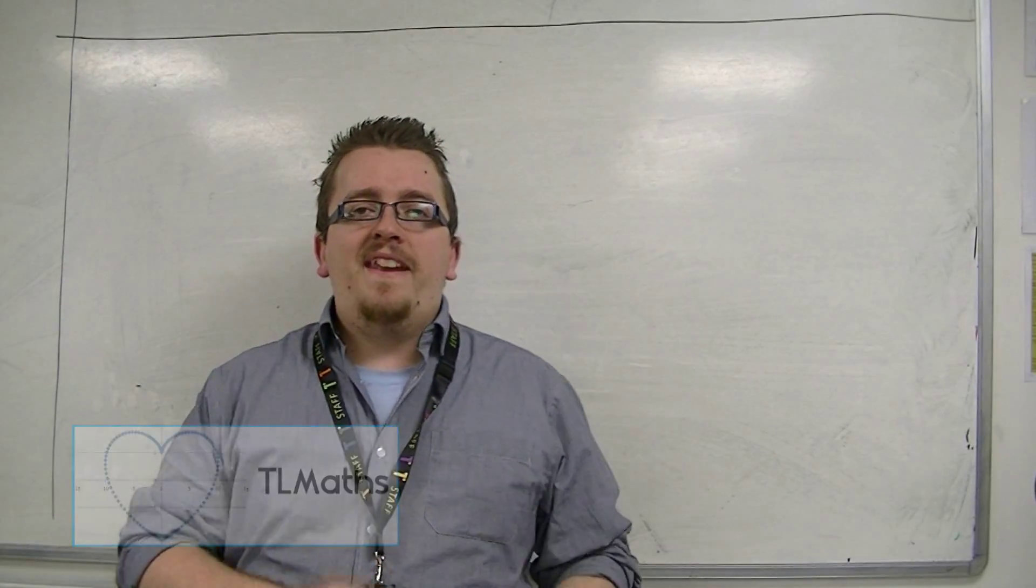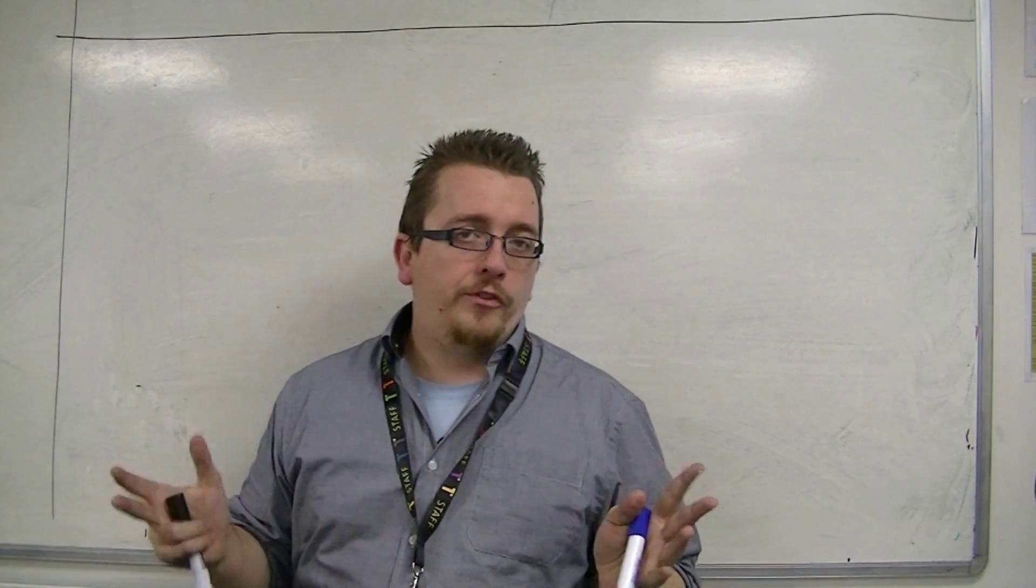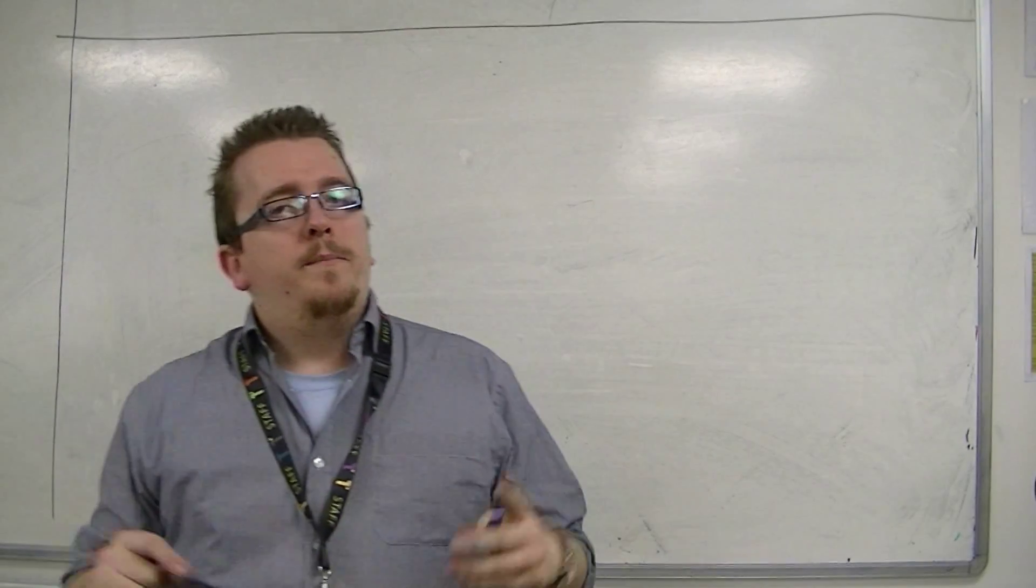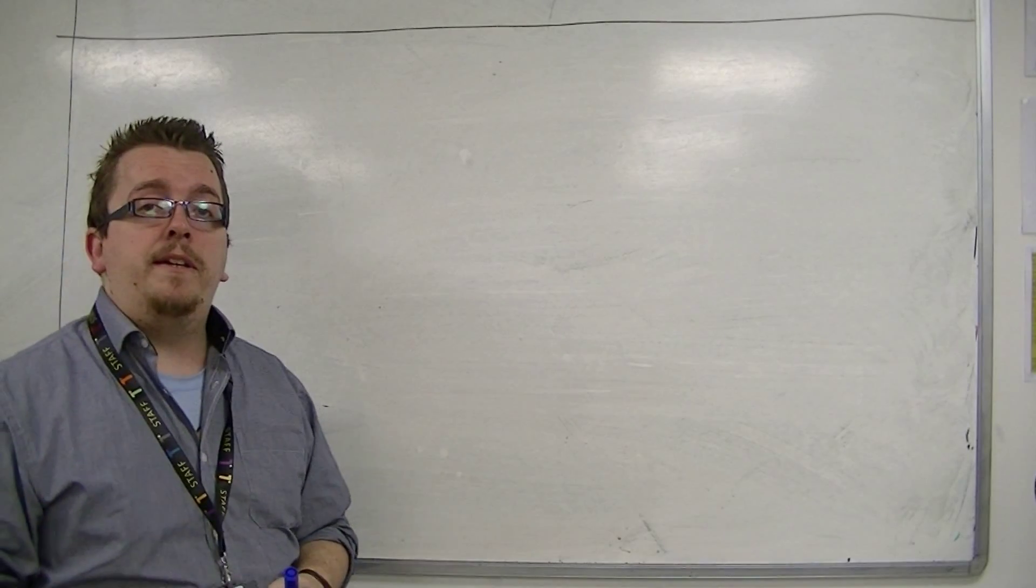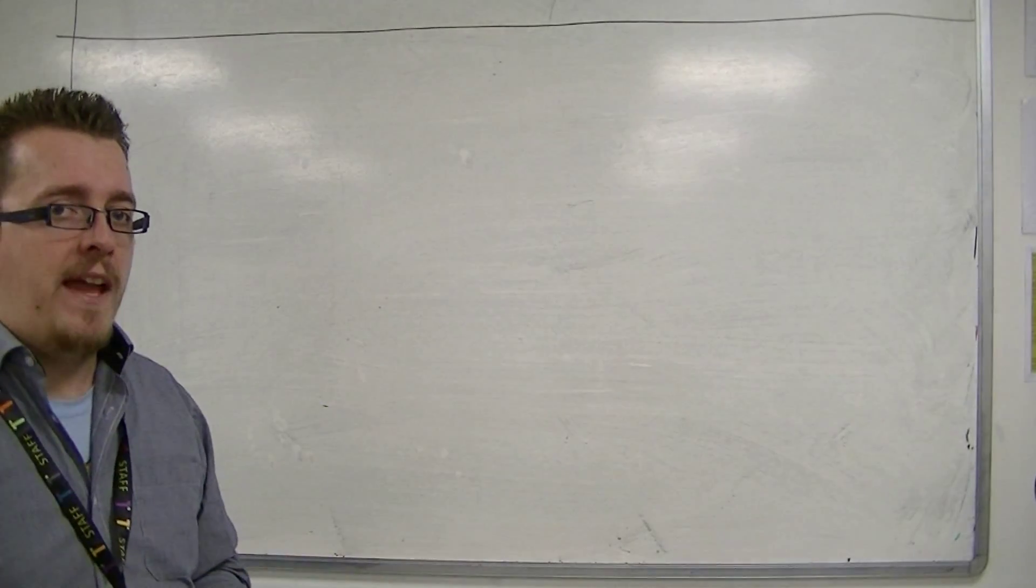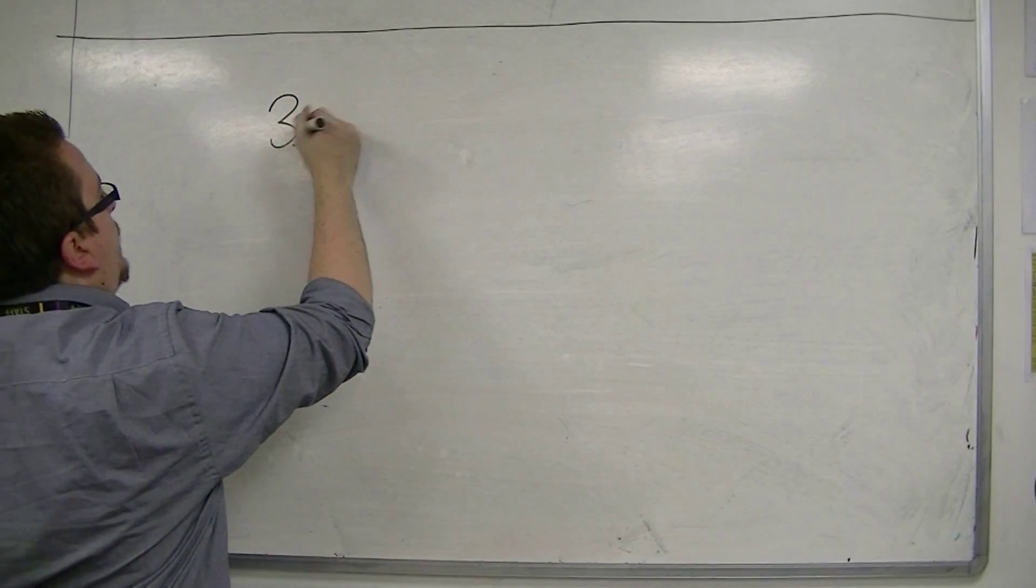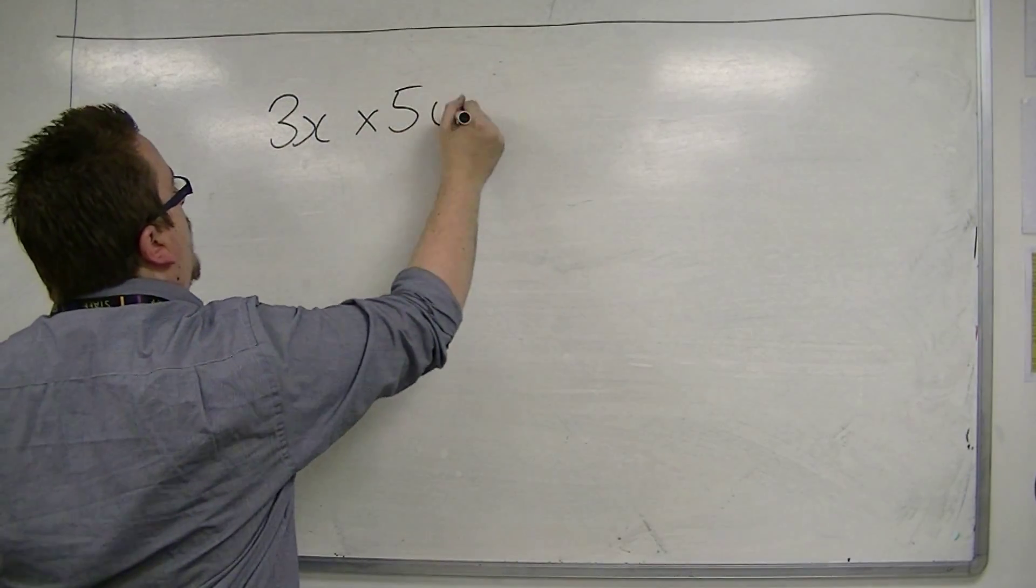This is where we're going to throw the analogy of pounds and euros out of the window. Because ultimately what we want to be doing next is multiplying expressions together. So you could have something like 3x times 5y.